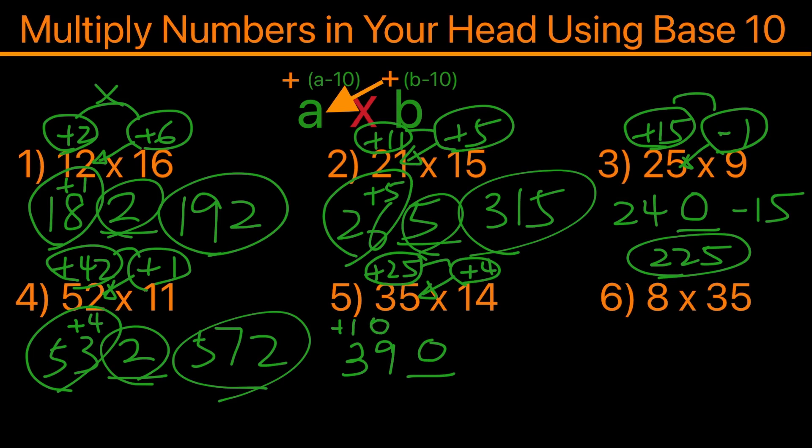So we'll go ahead and add 10 to 39, which is 49, and then drop down to 0, and the answer is 490.